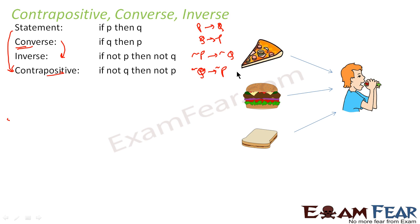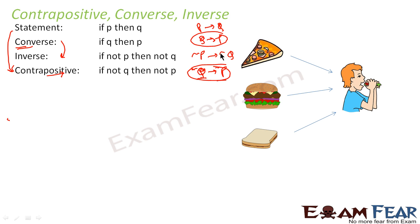So, from the statement: if you want to find the contrapositive, change direction first — p to q becomes q to p — then add negative signs to both to maintain the positive meaning. For converse, from the statement, just change direction. For inverse, from the statement, p and q stay in the same position but you add the invert (complement) to both. This is the memory tip to find converse, inverse, and contrapositive from a statement.